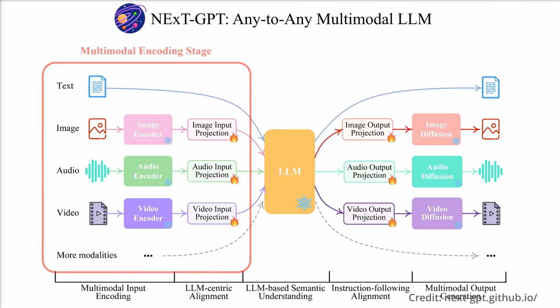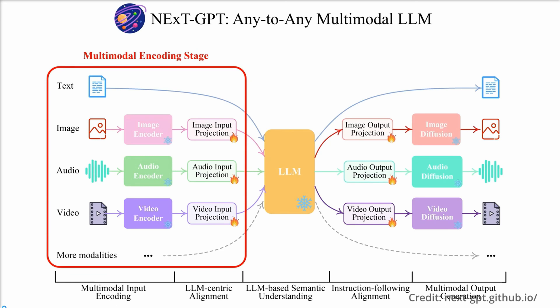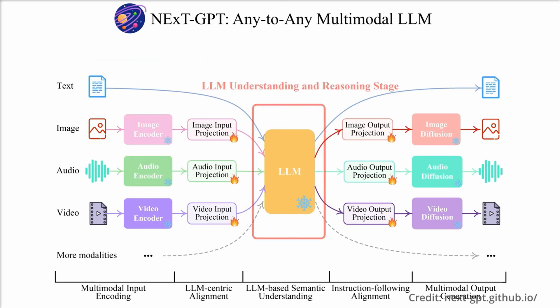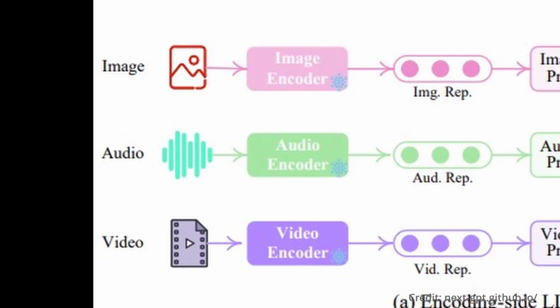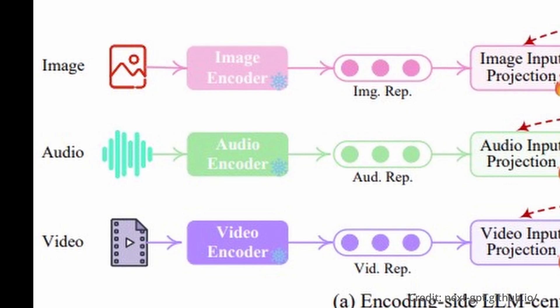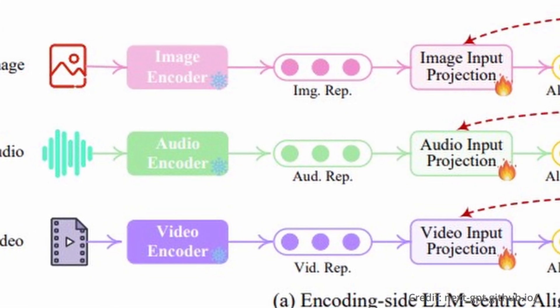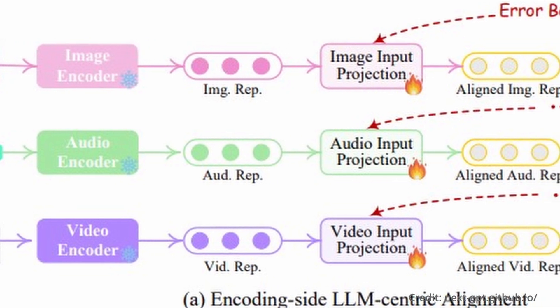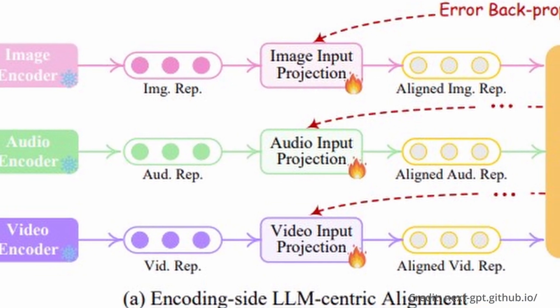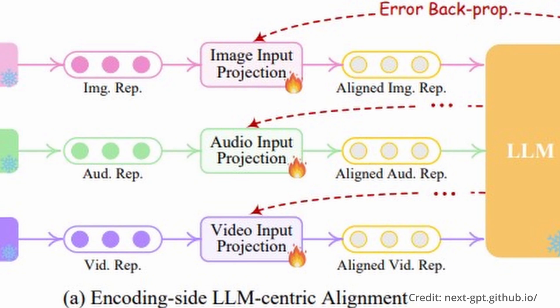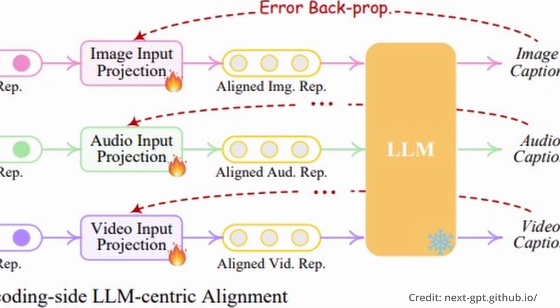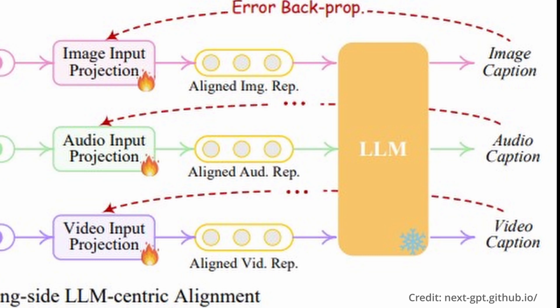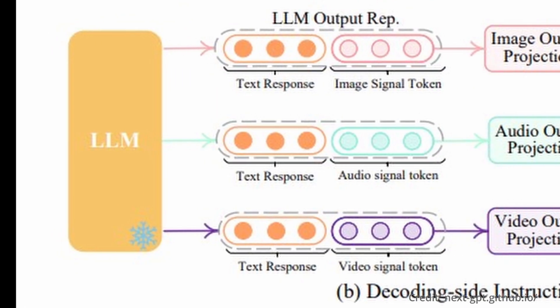At the core of its structure, NextGPT utilizes a three-tiered system, primarily focusing on multimodal encoding, LLM understanding and reasoning, and multimodal generation. It also leverages models like ImageBind to encode inputs across its six modalities and employs Vicuna as the core agent for semantic understanding and reasoning. This approach allows the generation of multimodal contents with specific instructions from the LLM utilizing transformer-based output projection layers.